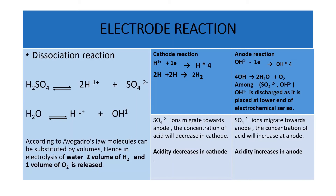At the cathode, H+ will accept one electron and change to hydrogen. At the anode, we have two anions: SO4²- and OH-. Among these two anions, which will discharge at the anode? According to the electrochemical series, whichever is placed at the lower end will be discharged. OH- is placed at the lower end, so among SO4²- and OH-, the OH- is going to be discharged.